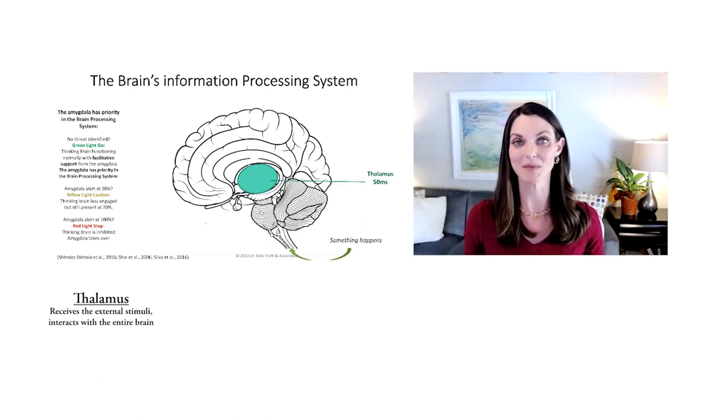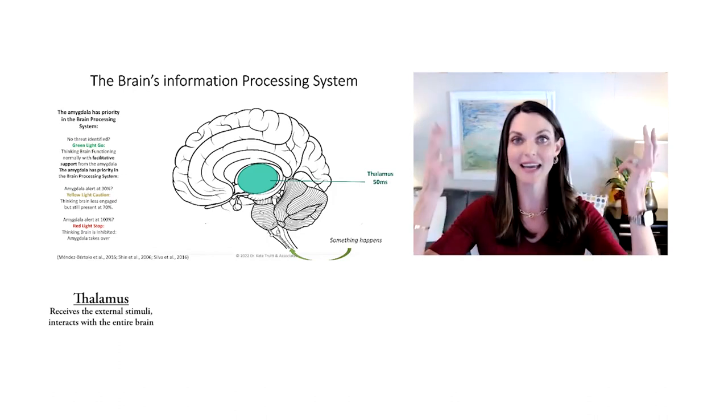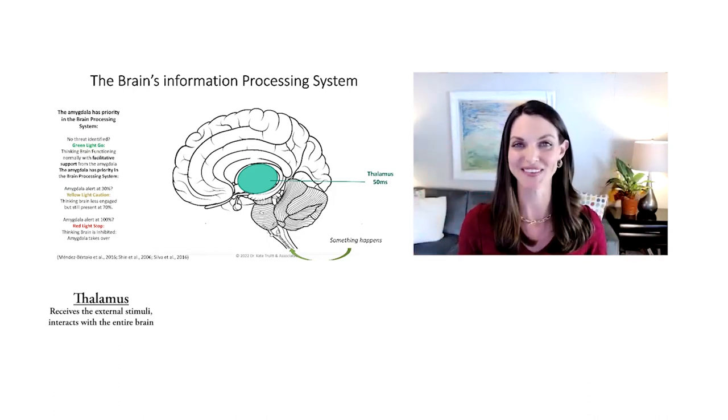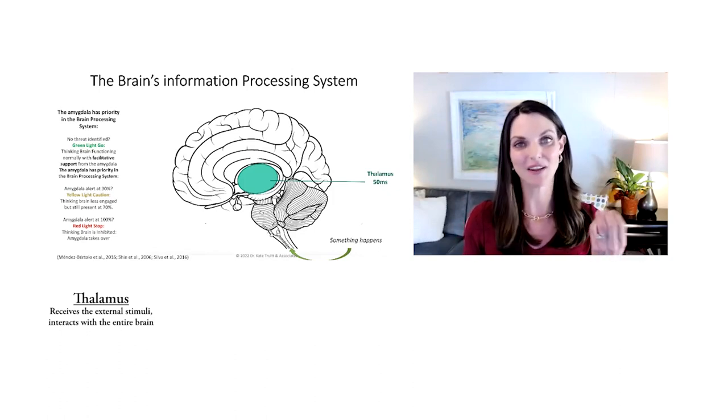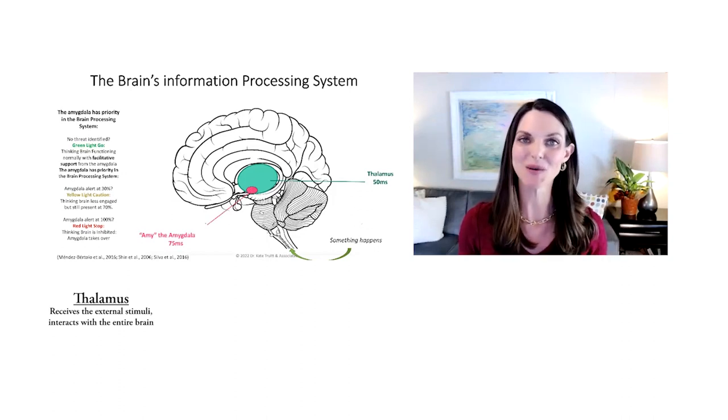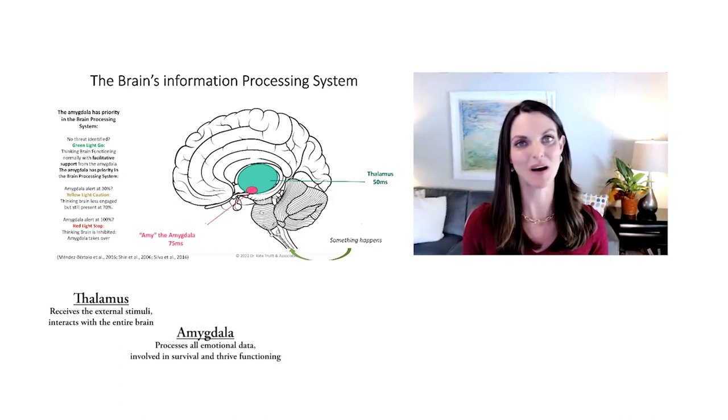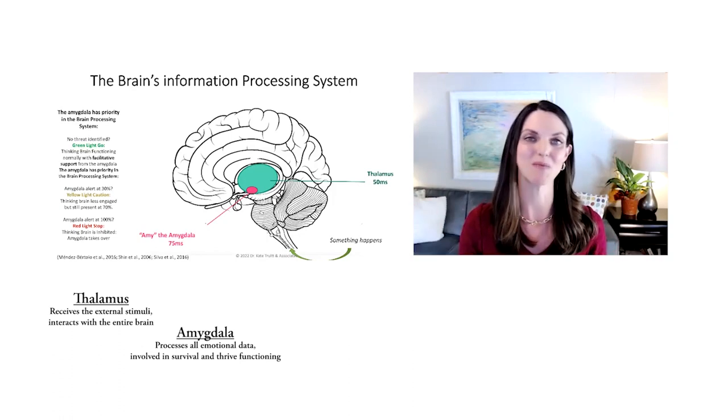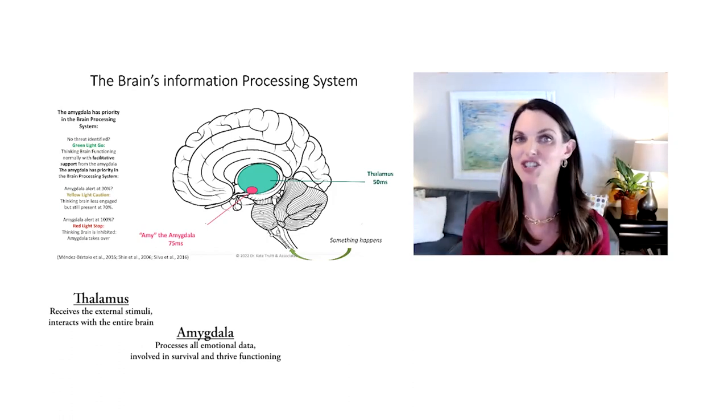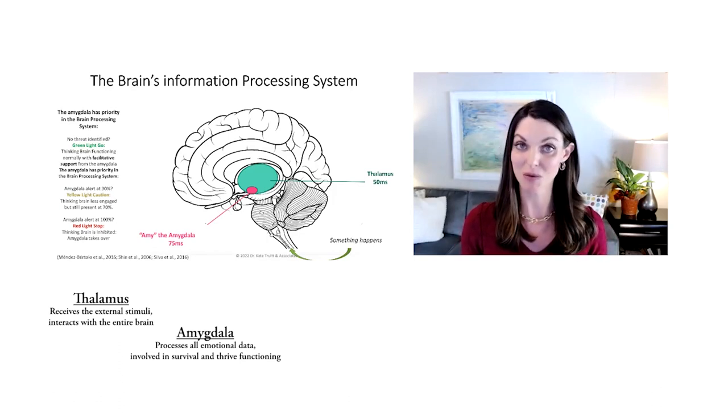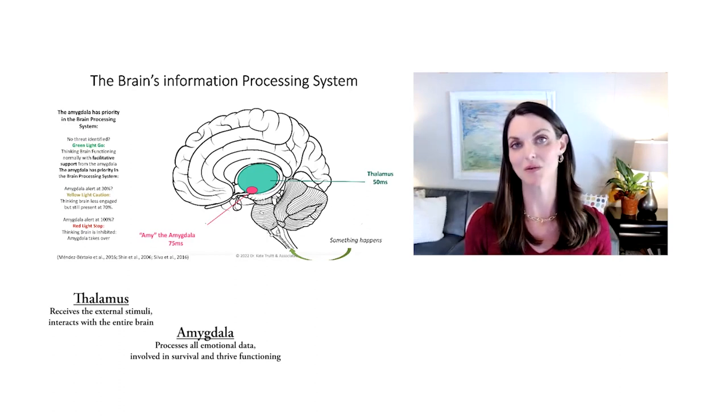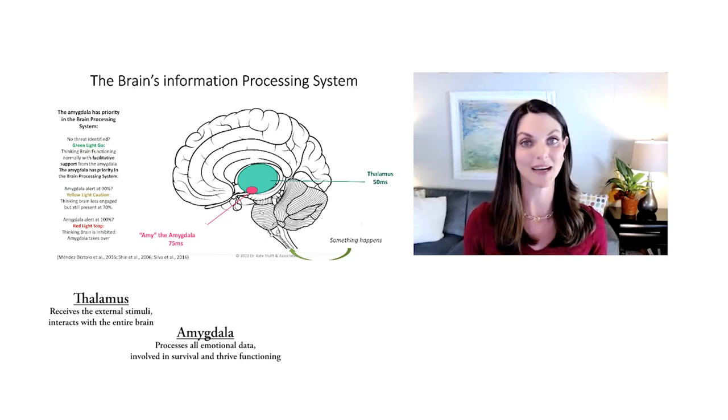It links up to our thinking brain and our thinking brain talks to our thalamus to help us make sense of the world around us. That little thalamus as it's bringing in that something-happening data says, 'Hey Amy, what do we know about this information?' while it's also sending data to other parts of our brain. But again, the amygdala is a really important check-in point because if there's a threat to that something, our little friend Amy the amygdala is going to play a really important role in mobilizing us to help us stay safe.